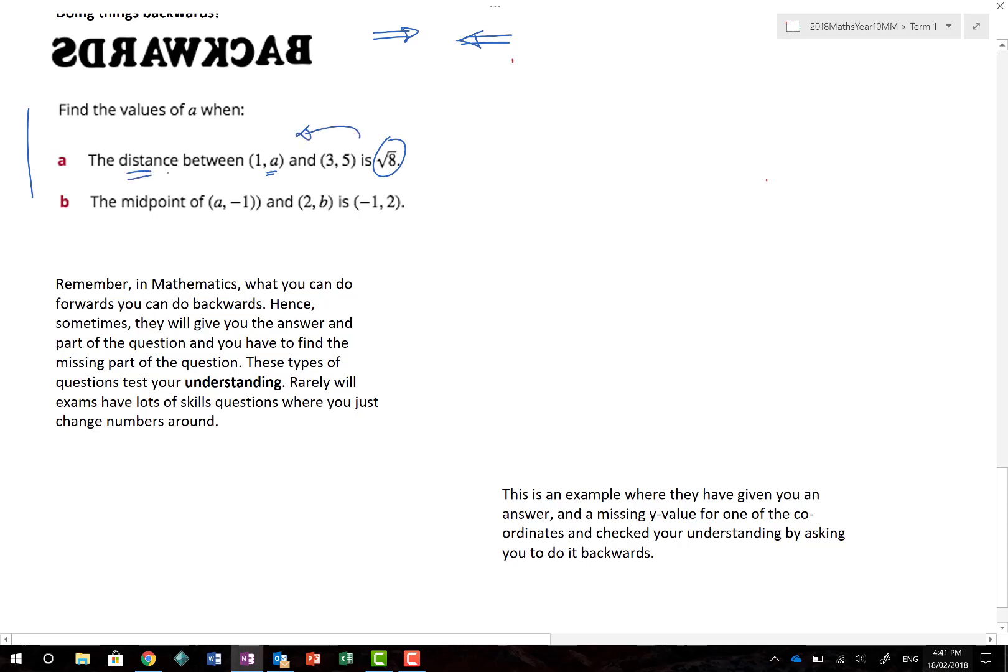Now, the first thing here is the distance. So, I'm going to draw a little diagram and go, well, that's 1 comma A and this is 3 comma 5. And it's telling me the distance between these points is root 8. So, I actually know that distance, that line there, is root 8. Well, if it's distance, we know it has something to do with Pythagoras theorem. So, if we call this A, we call that B and we call that C, then what do we know?